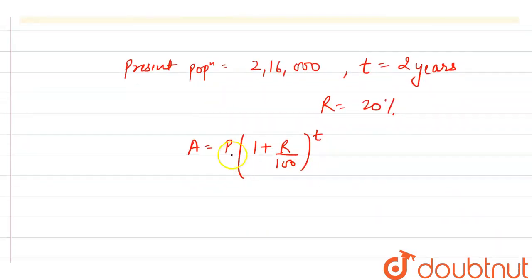Now let's substitute the values. The principal amount is the present population. So A equals 2,16,000 times (1 plus 20/100) raised to power 2.